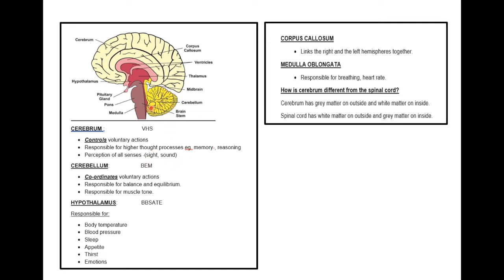In yellow, that is the cerebellum. I teach the functions of the cerebellum as BEM: responsible for balance and equilibrium, and responsible for muscle tone. The major difference is the cerebrum controls voluntary actions, whereas the cerebellum coordinates voluntary actions. Don't just say 'voluntary actions' or 'higher thought processes' — you must say 'controls voluntary actions' or 'responsible for.'